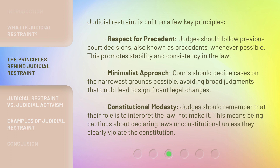Judicial restraint is built on a few key principles. First, respect for precedent: judges should follow previous court decisions, also known as precedents, whenever possible, as this promotes stability and consistency in the law. Second, a minimalist approach: courts should decide cases on the narrowest grounds possible, avoiding broad judgments that could lead to significant legal changes. Third, constitutional modesty: judges should remember that their role is to interpret the law, not make it, meaning they should be cautious about declaring laws unconstitutional unless they clearly violate the Constitution.